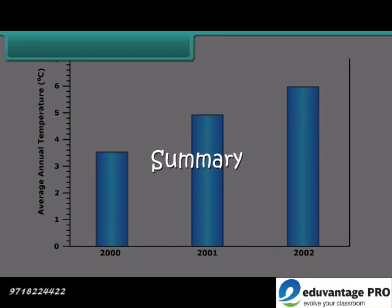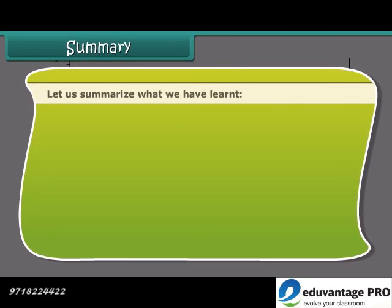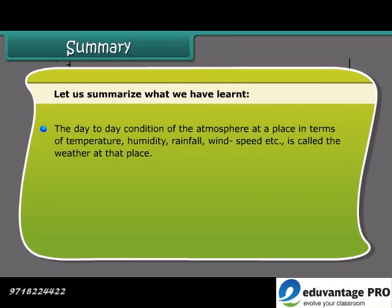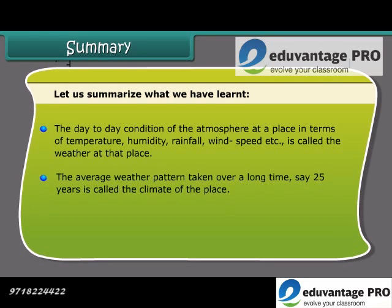Summary. The day-to-day condition of the atmosphere at a place in terms of temperature, humidity, rainfall, wind speed, etc. is called the weather at that place. The average weather pattern taken over a long time, say 25 years, is called the climate of the place.